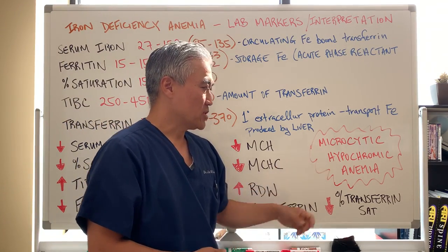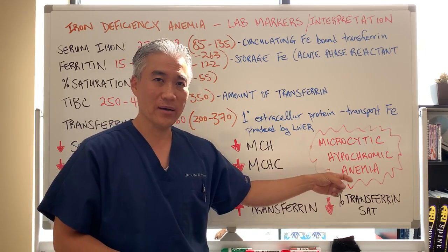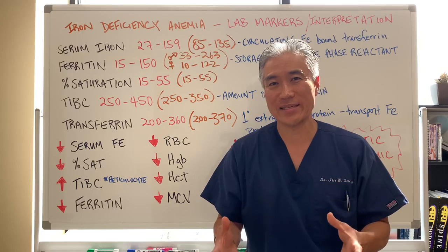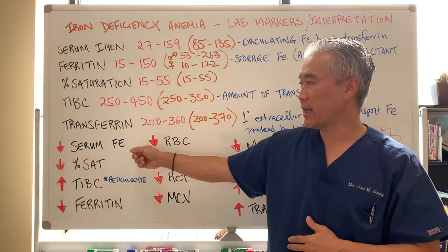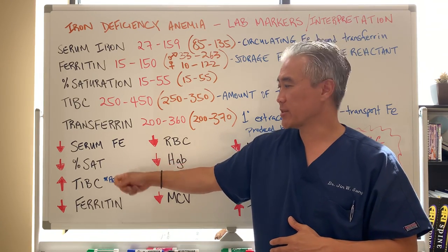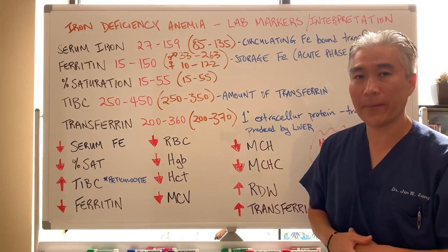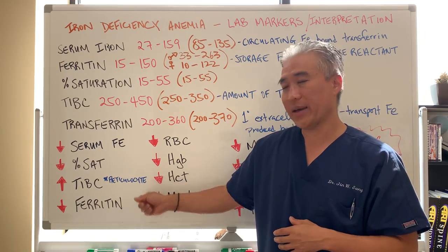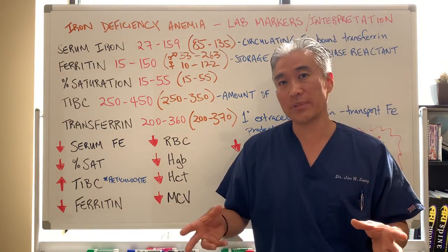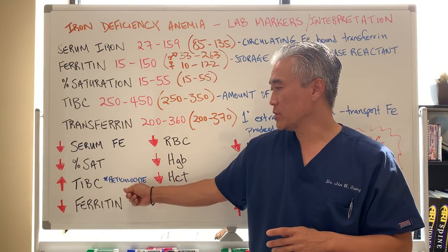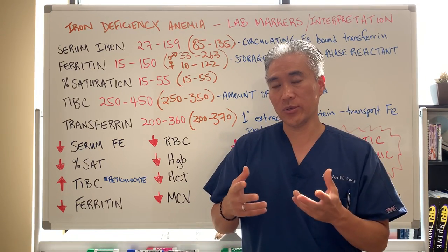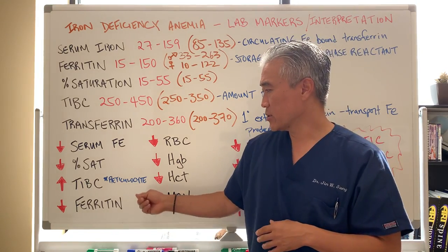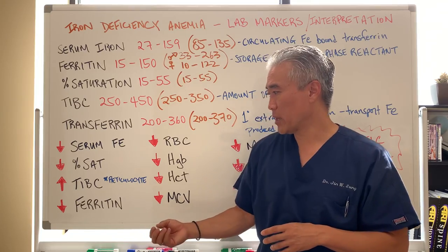When we look at iron deficiency, the technical term is microcytic hypochromic anemia — basically iron deficiency anemia. What do we see? You can have low serum iron, low percentage saturation, and an increase in total iron binding capacity, because your body is trying to bind more iron. When iron binding capacity is elevated, we think about a possible GI bleed or issues with iron loss. We can look at reticulocyte count — when it goes up, we're looking at maybe a bleed somewhere. Reticulocytes are basically immature red blood cells, and the numbers keep going up as your body keeps producing more.